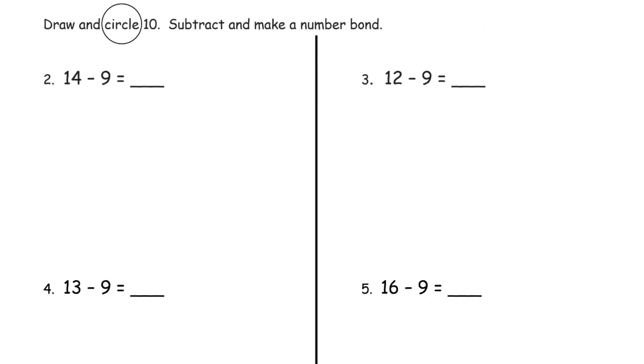Now we have to draw and circle 10. So, 14 minus 9. That's our 1, 2, 3, 4, 5, 6, 7, 8, 9, 10. Alright, that's our 10 group. And then we need 4 more, because it's 14. 1, 2, 3, 4.